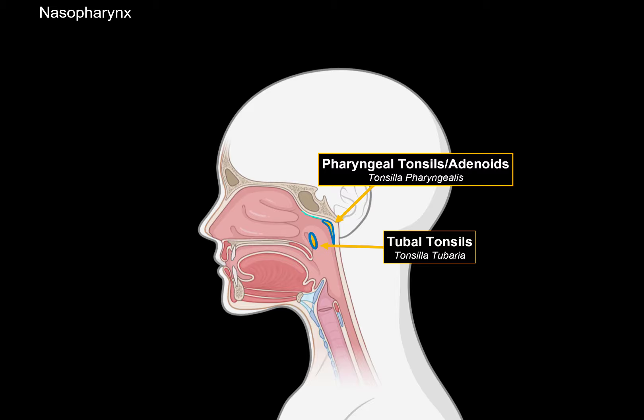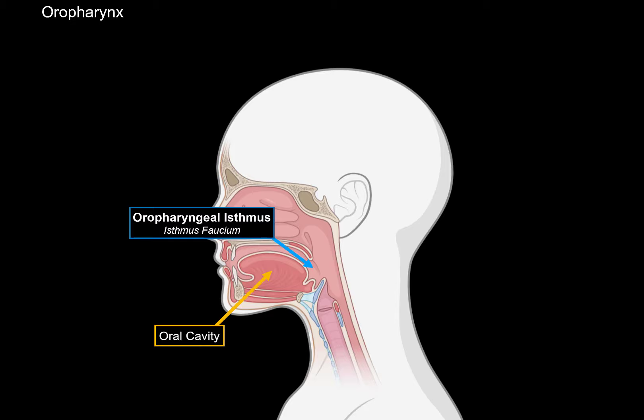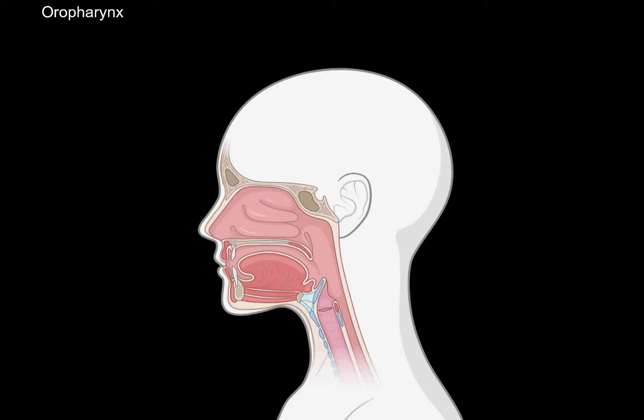That was all for the anatomy of the nasopharynx. Next is the oropharynx, which is situated at the level of the third to fourth cervical vertebrae. The oropharynx is bordered by the soft palate and the epiglottis, and is connected to the oral cavity through something called the isthmus faucium, or the oropharyngeal isthmus, which is an opening at the back of the mouth into the throat.